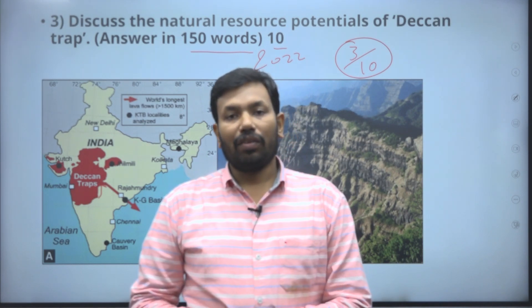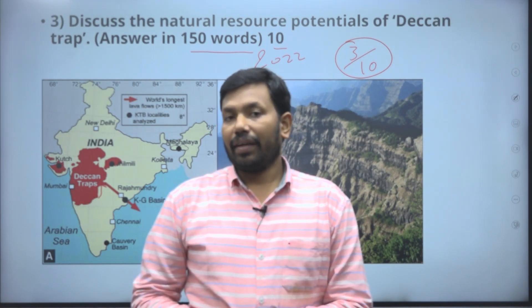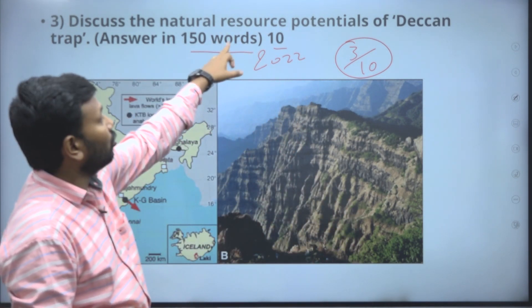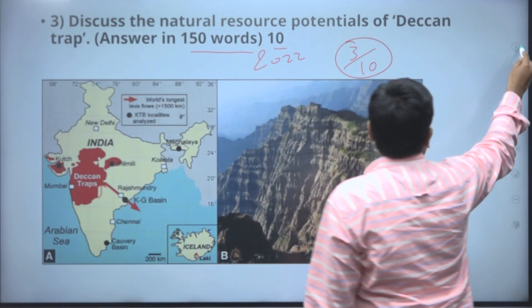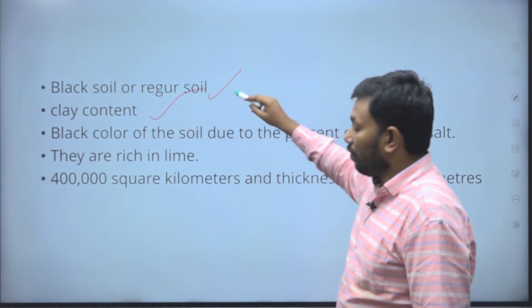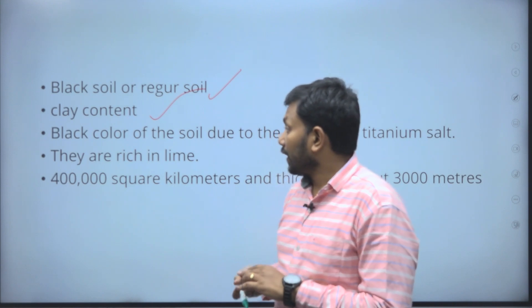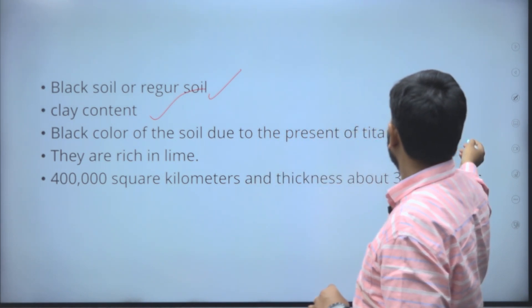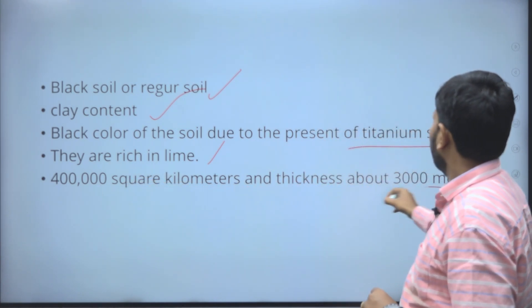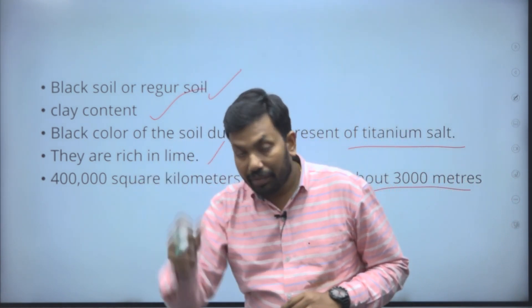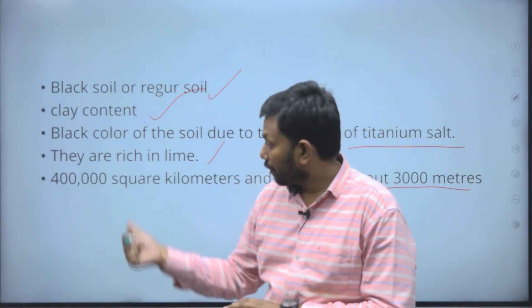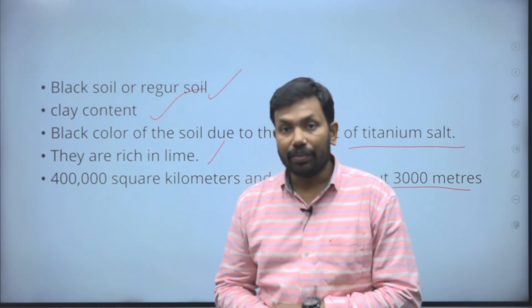Write about the uses of black soil, why it is called cotton black soil, and one or two crops grown in it — because the question asks about resource potentials. Black or regur soil has high clay content, is self-ploughing, and is black due to the presence of titanium salts. It covers about 4 lakh square kilometers of India, with a thickness of about 3,000 meters — more than 10% of India's land.